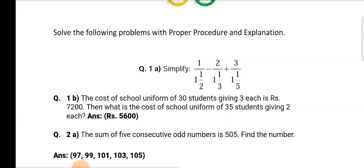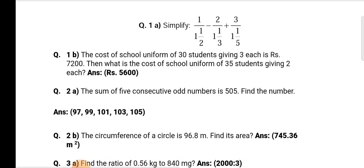Question 1b: The cost of school uniform of 30 students giving 3 each is rupees 7200. Then what is the cost of school uniform of 35 students giving 2 each? Answer is rupees 5600.